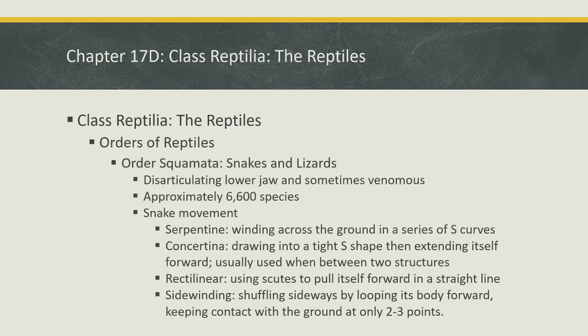Moving on — orders of reptiles. The first order is Order Squamata: snakes and lizards. One characteristic of this order is what's called a disarticulating lower jaw, meaning the snakes and lizards can essentially dislocate or unhinge their lower jaw to open it super widely. This largely comes in handy for snakes that swallow their prey whole, which most if not all snakes can do. And then sometimes venomous — approximately 6,600 species.